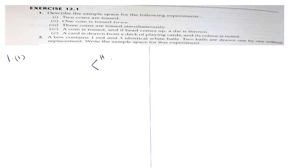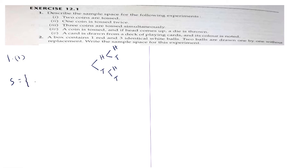When we toss the first coin, we will either get a head or a tail. And then again, if we toss another coin, it will result in another head or tail. So the sample space will be: head-head, head-tail, tail-head, and tail-tail. This constitutes the sample space.